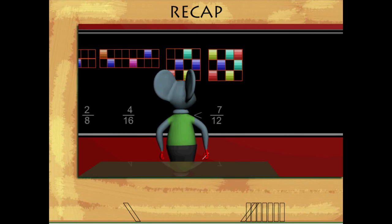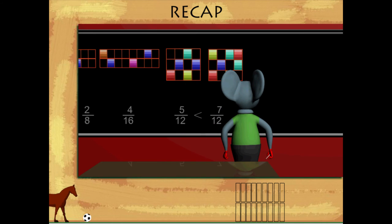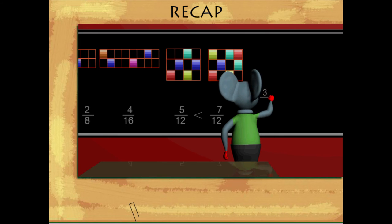Toby puts a less-than sign in between to show five by twelve is less than seven by twelve.